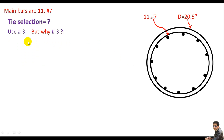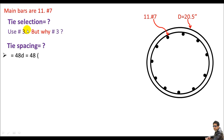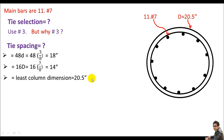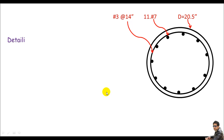For tie spacing, per ACI 318 I take the least of three options: (1) 48 times the tie bar diameter — No.3 bar is 3/8 in., so 48 × 3/8 = 18 inches; (2) 16 times the main bar diameter — No.7 bar is 7/8 in., so 16 × 7/8 = 14 inches; (3) least column dimension = 24.5 inches. The least is 14 inches. So I'll use No.3 ties at 14 inches center-to-center.